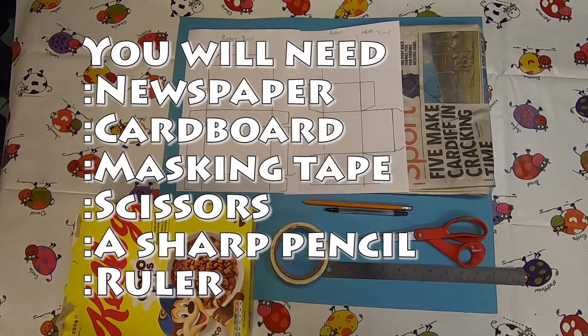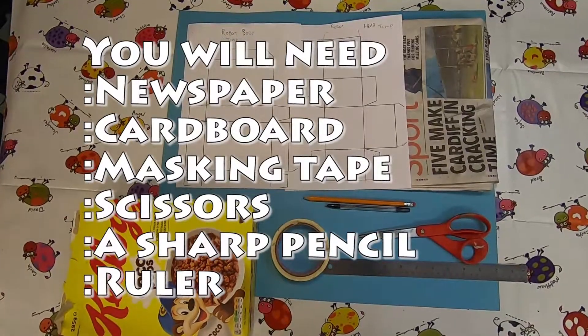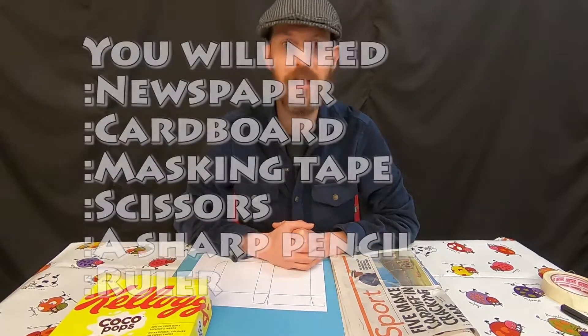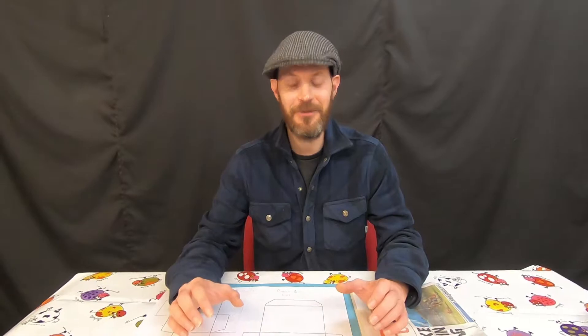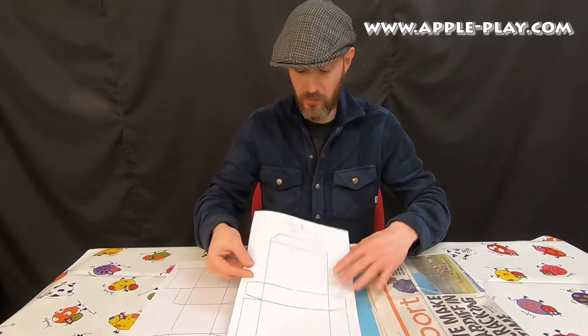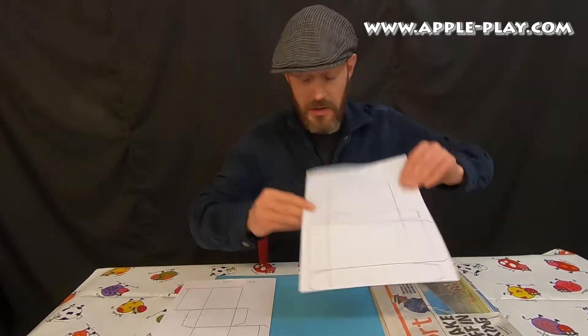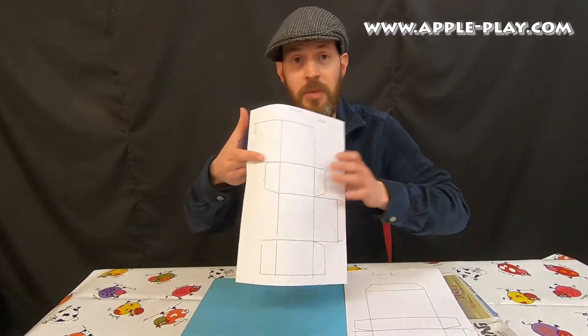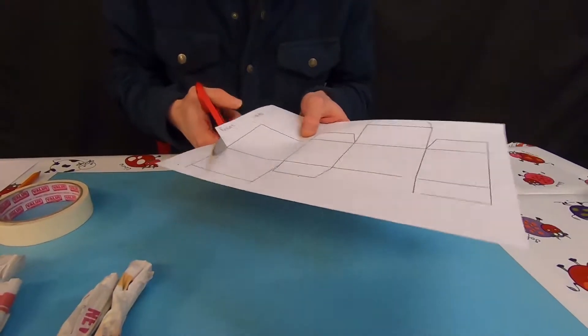Hello, this is Jake here from Apple Hardblock and today we're making robots out of cardboard. First thing you need to do is print off two templates from the website - the robot body template and the robot head template - and you're going to cut that out.